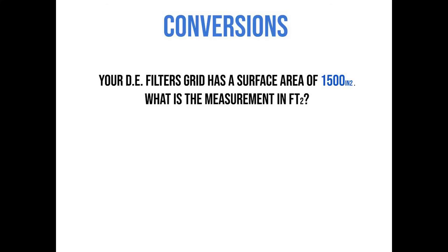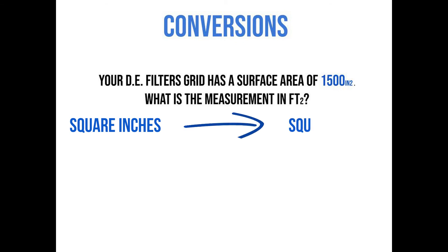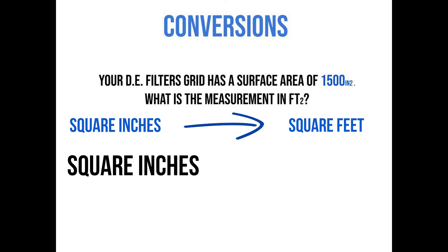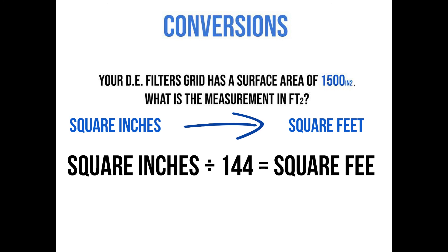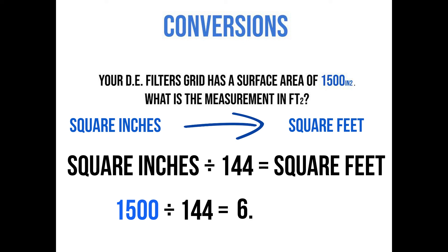Now we're going to learn how to convert square inches into square feet. We'll be dealing with this when doing filter area or filter surface area for different types of filters — specifically a rectangular or square filter with a length and width. Let's read our problem: Your DE grids has a filter surface area of 1500 square inches. What is the measurement in square feet? To convert square inches to square feet, we divide by 144. So 1500 divided by 144 gives us 6.94 square feet.